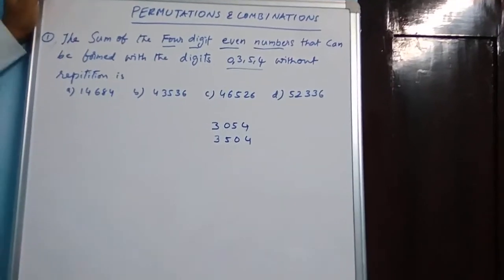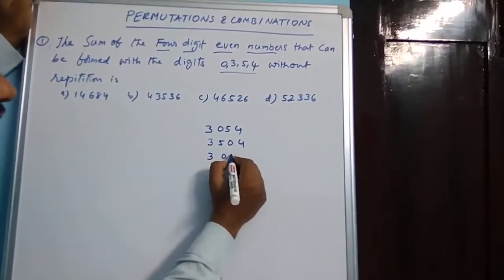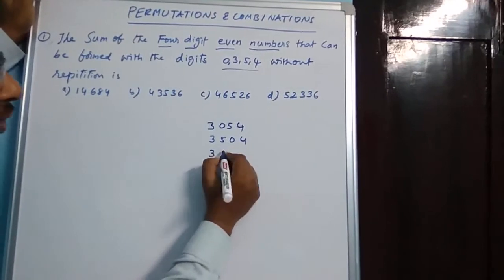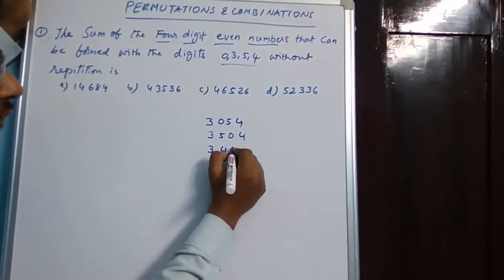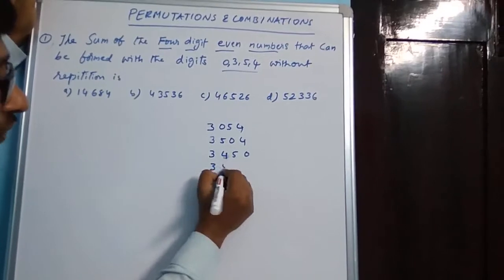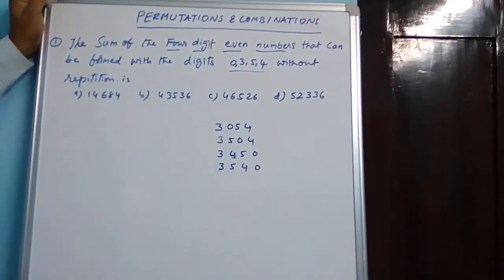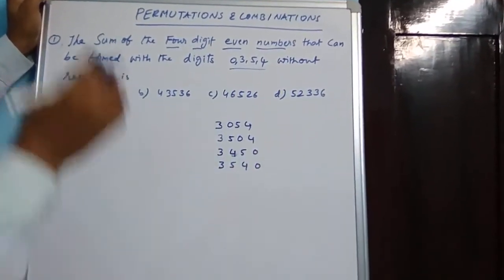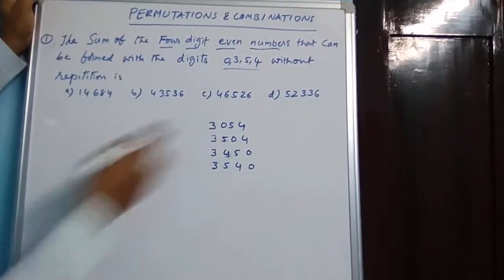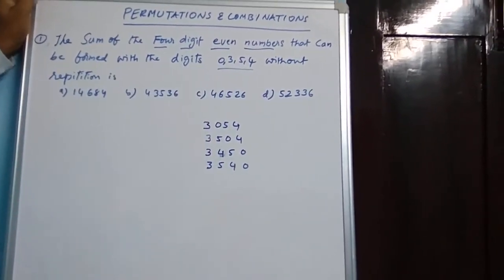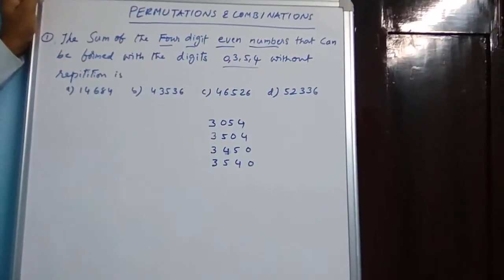Continuing the listing of four-digit even numbers starting with 3: 3, 5, 0, 4 and 3, 0, 5, 0 — wait — 3, 5, 4, 0 and 3, 0, 4, 0. These are four-digit even numbers: 3, 4, 5, 0; 3, 5, 4, 0; 3, 0, 5, 4; 3, 5, 0, 4. All these are four-digit even numbers.